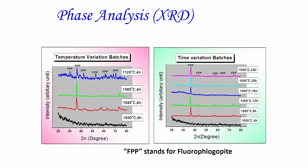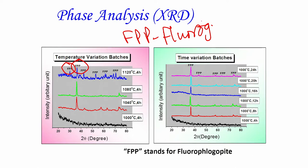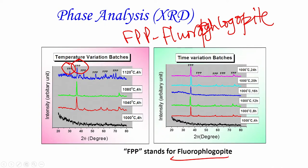Now let us examine the phases formed. In the temperature-variation batches we obtained fluoro phlogopite (FPP), which is an important phase. At 1000°C for 4 hours the material is amorphous glass with no distinct peaks. As the temperature increases to 1000°C and above, clear distinct peaks of fluoro phlogopite begin to appear.